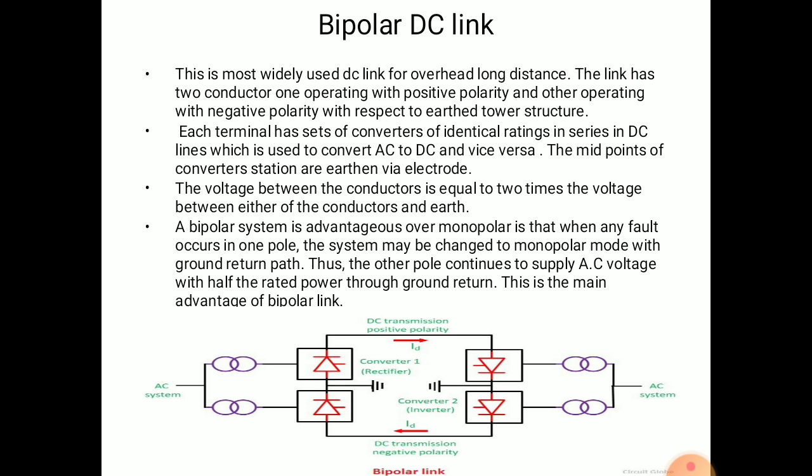The neutral point — the junction between converters — may be grounded at one end or at both ends. If it is grounded at both ends, each pole can operate independently. Therefore, the voltage of a bipolar link is expressed as ±500 kV. The voltage between the conductors is equal to two times the voltage between either conductor and earth.